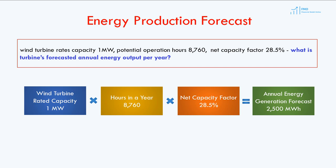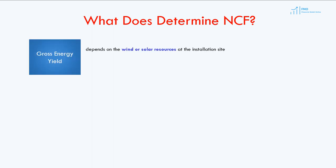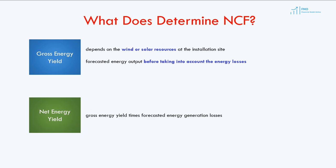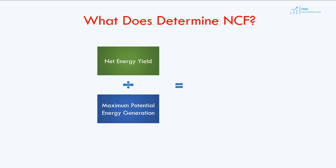We can further ask ourselves: what determines the net capacity factor for a wind turbine or solar panel that does not have an operations history? The forecasted energy output comes from gross energy yield, which depends on the wind or solar resources at the installation site. It is the forecasted energy output before accounting for energy losses due to, for example, downtime caused by maintenance. We will look into resource assessment and determination of gross energy yield in the next lesson. Net energy yield is gross energy yield times forecasted energy generation losses, and the net capacity factor is the ratio of net energy yield to maximum potential energy generation in one year.